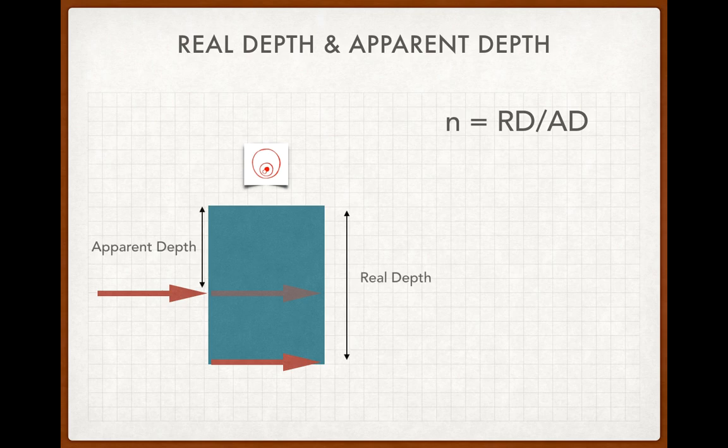Then you measure your two depths using a meter stick: apparent depth and real depth. You divide the big one by the small one to get the refractive index.